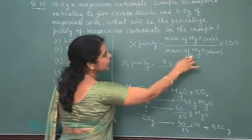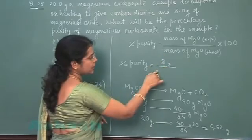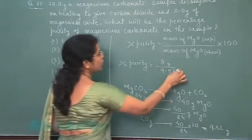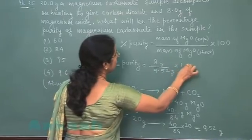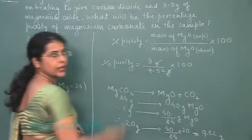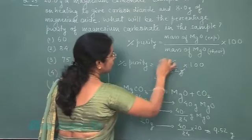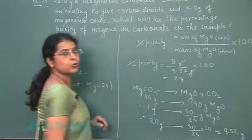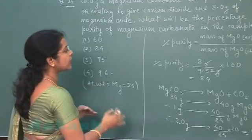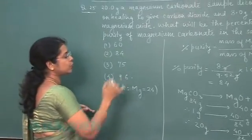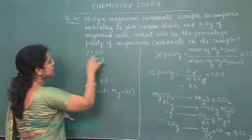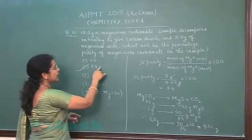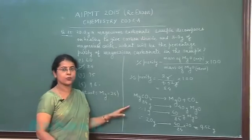Putting the theoretical value of 9.52 gram into the expression: 8/9.52 × 100 = 84 percent. So the correct answer should be 84. The second option has the numerical value 84, so the correct answer is the second option.